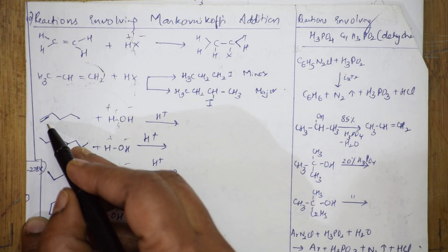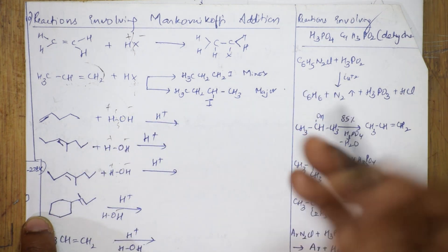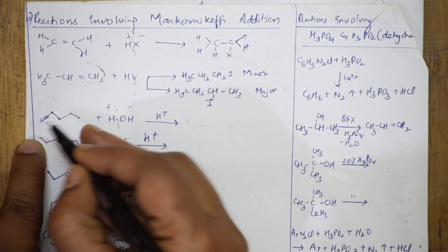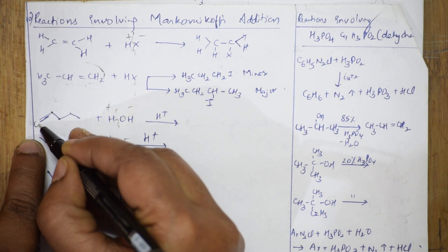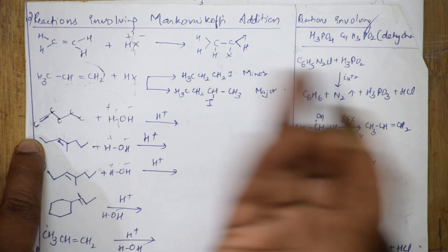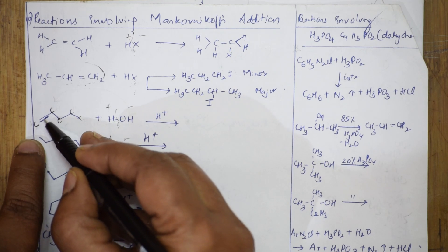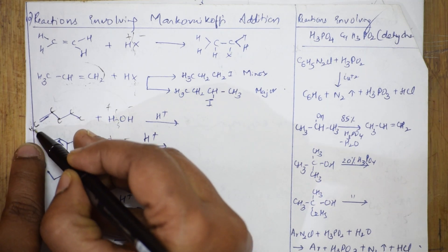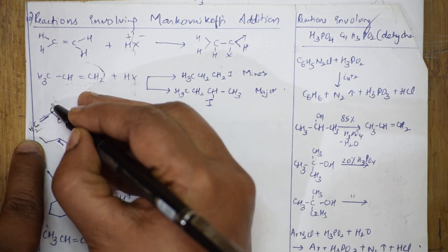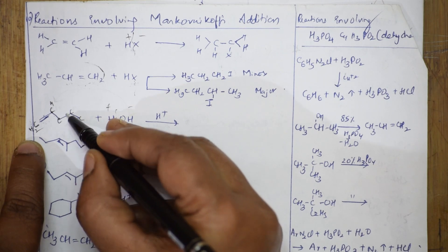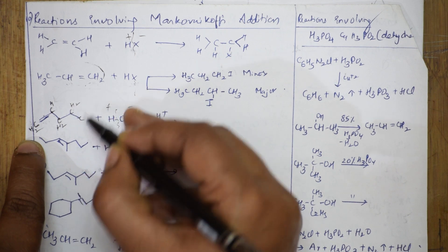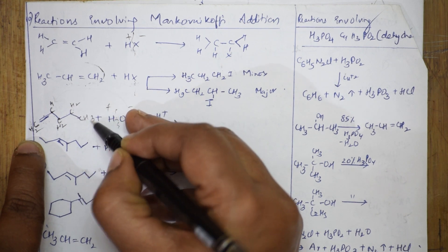Now fill the hydrogens. The first carbon has two bonds already, so it becomes CH₂. The second carbon has one bond and becomes CH with one hydrogen. The third carbon has two bonds — CH₂. The fourth carbon also has two bonds — CH₂. The fifth carbon has only one bond, so it becomes CH₃. According to Markovnikov's rule, the negative addendum adds to the carbon with the lesser number of hydrogens around the double bond.